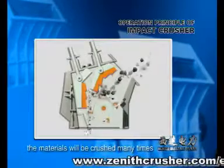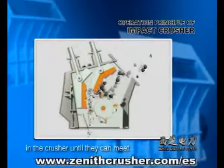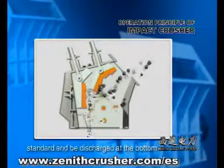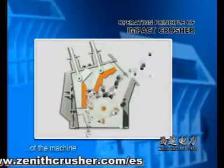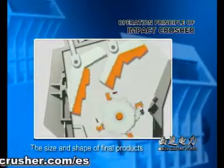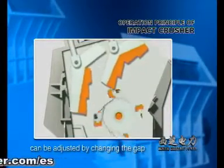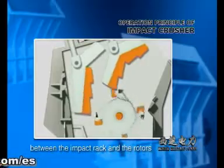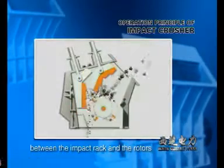In this way, the materials will be crushed many times in the crusher until they can meet the standard and be discharged at the bottom of the machine. The size and shape of the final products can be adjusted by changing the gap between the impact rack and the rotors.